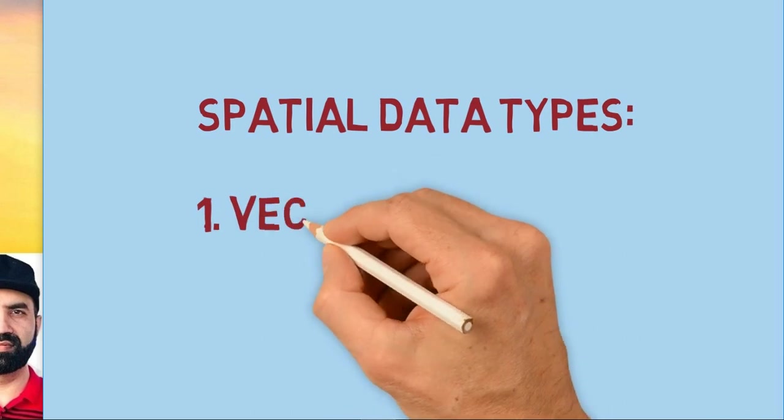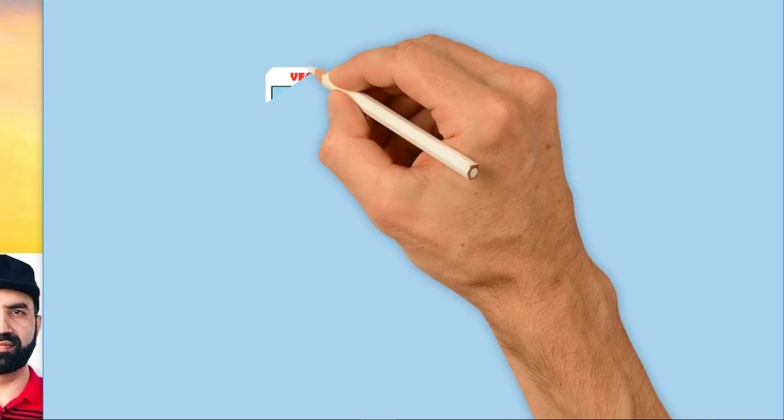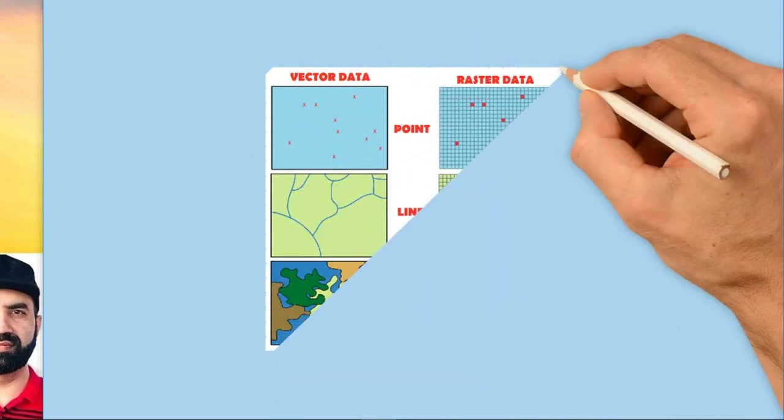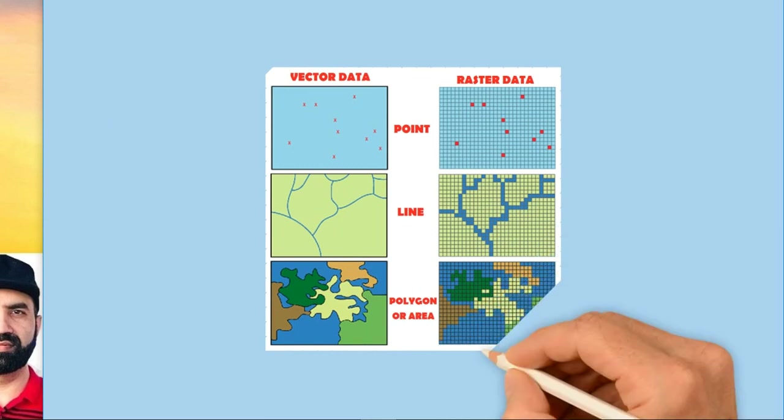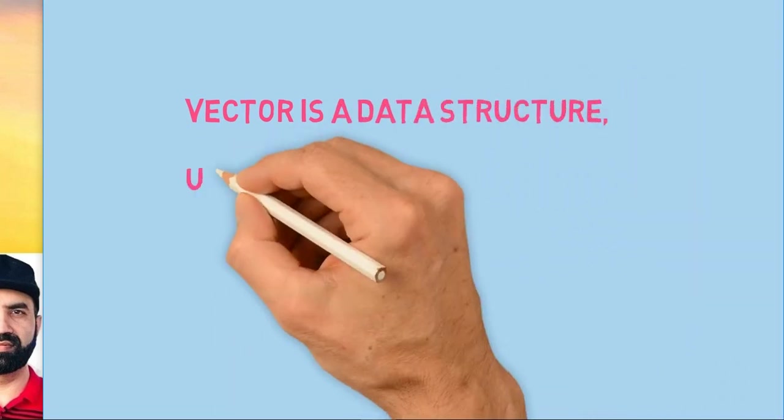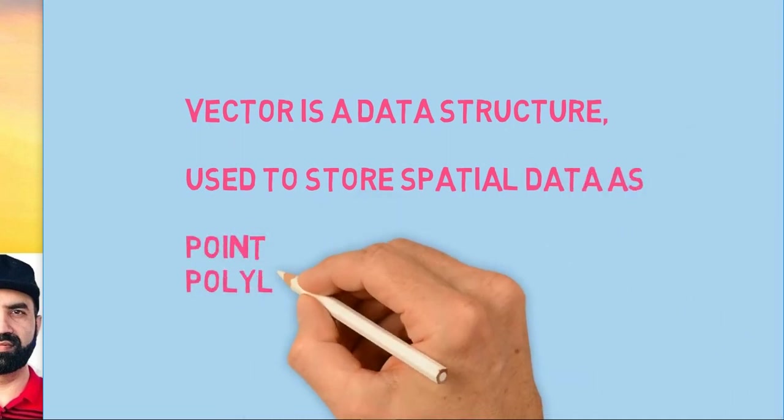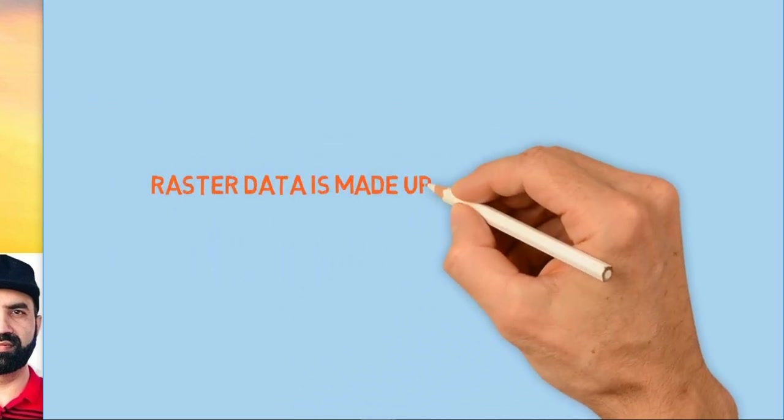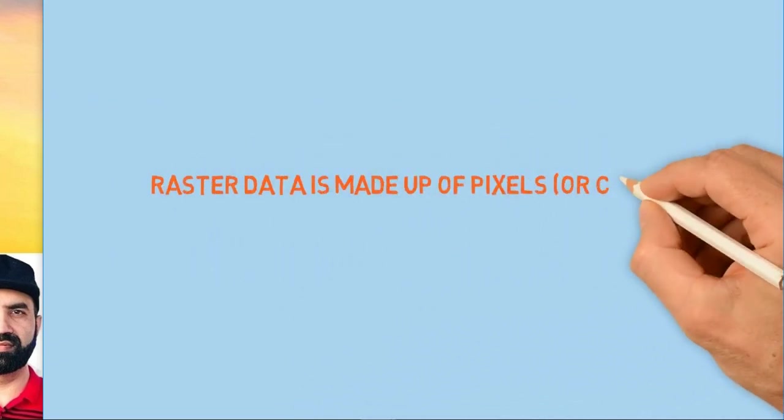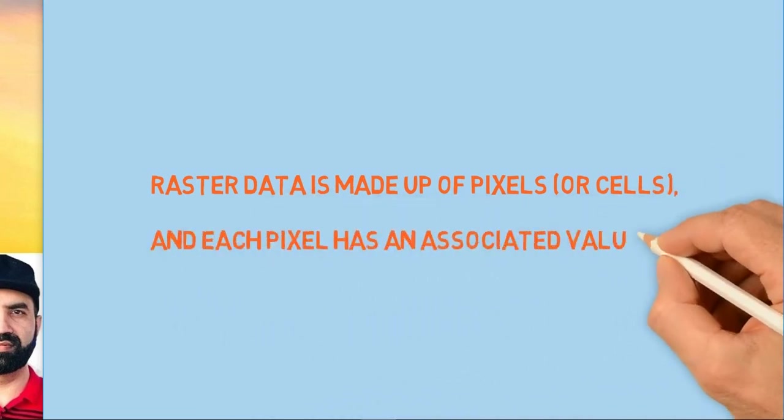So what are the spatial data types? Vector data and raster data. Vector is a data structure used to store spatial data as point, polyline, and polygon. Raster data is made up of pixels or cells, and each pixel has an associated value—for example, satellite images.